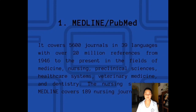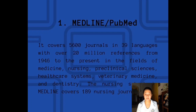The first bibliographic retrieval system to consider is MEDLINE or PubMed. It covers 5,600 journals in 39 languages with over 20 million references from 1946 to the present in the fields of medicine, nursing, preclinical sciences, healthcare systems, veterinary medicine, and dentistry. The nursing subset in MEDLINE covers 189 nursing journals. It is an online searchable database of research literature in the biomedical and life sciences. PubMed is the search engine accessing primarily the database of references and some abstracts of life sciences and biomedical topics.